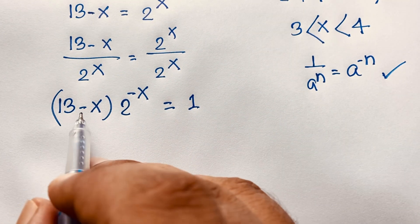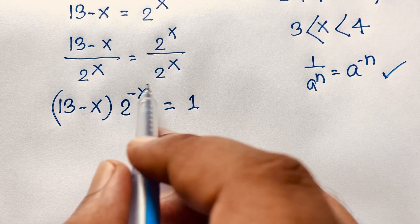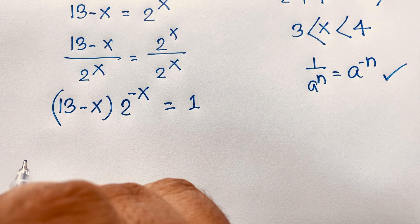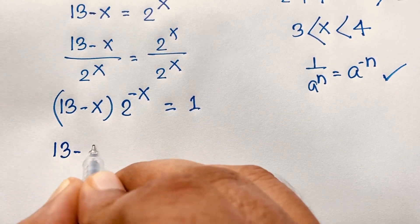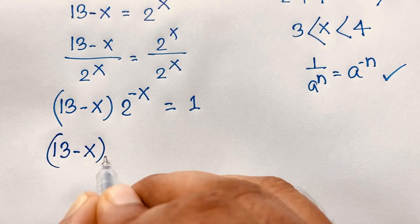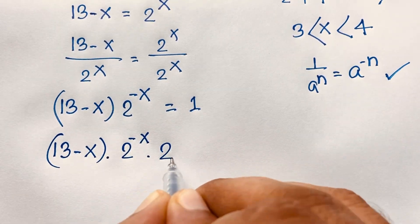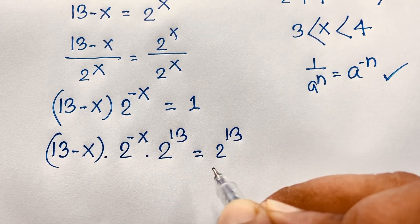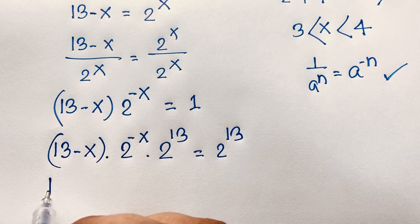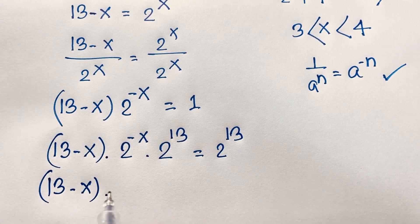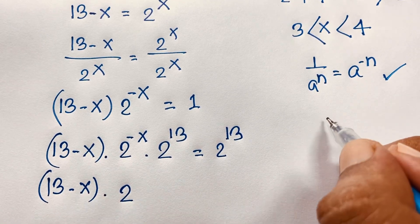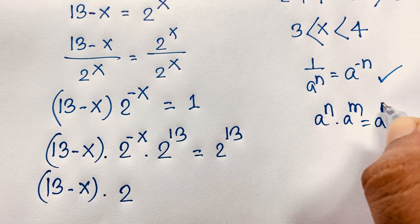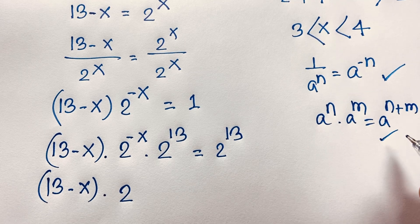Now I have 13 minus x times 2 to the power negative x equals 1. I want to use the Lambert W function here, so I multiply both sides by 2 to the power 13. This gives 13 minus x times 2 to the power negative x times 2 to the power 13 equals 2 to the power 13. I apply the exponential formula: a to the power n times a to the power m equals a to the power n plus m.